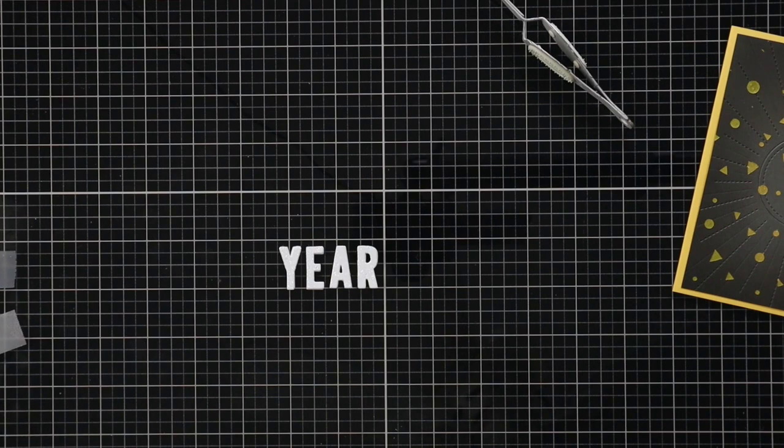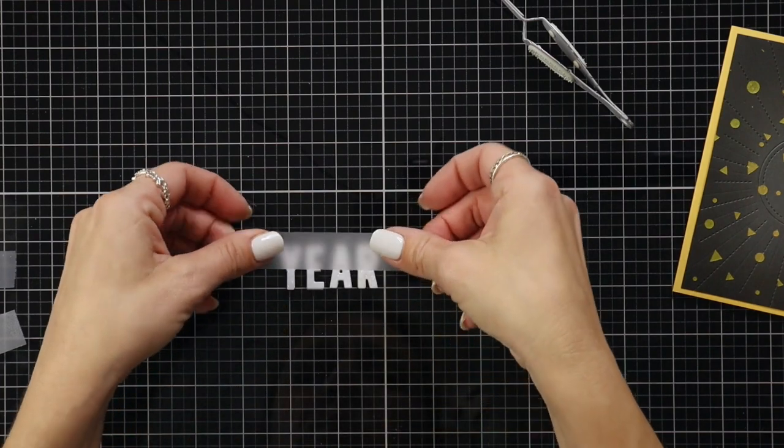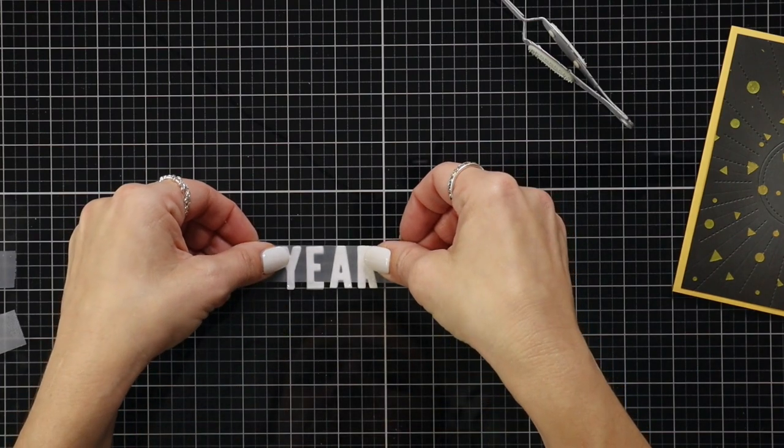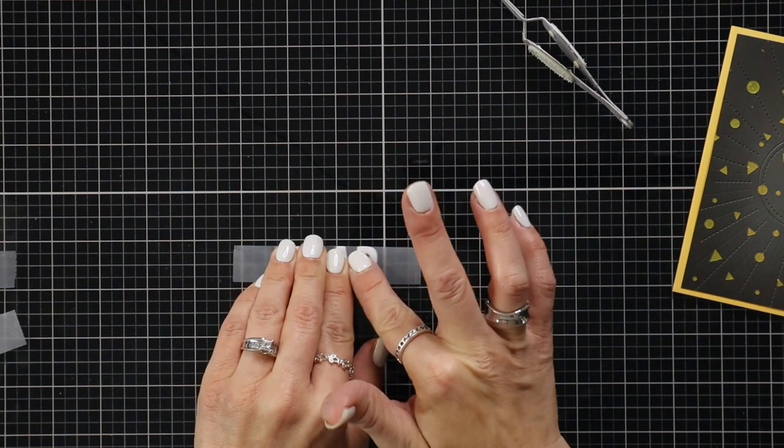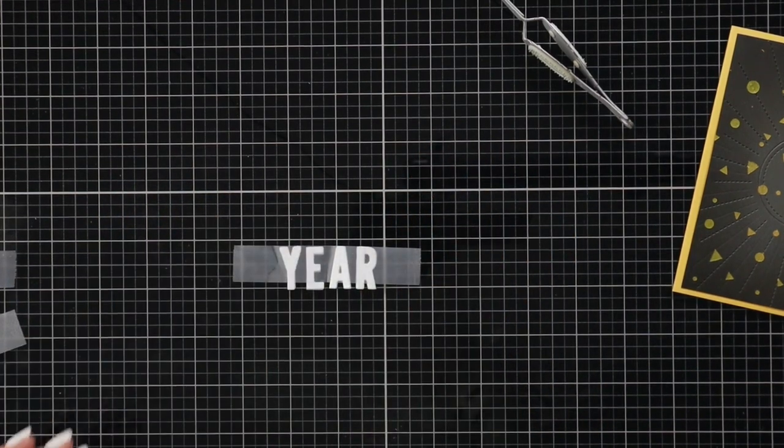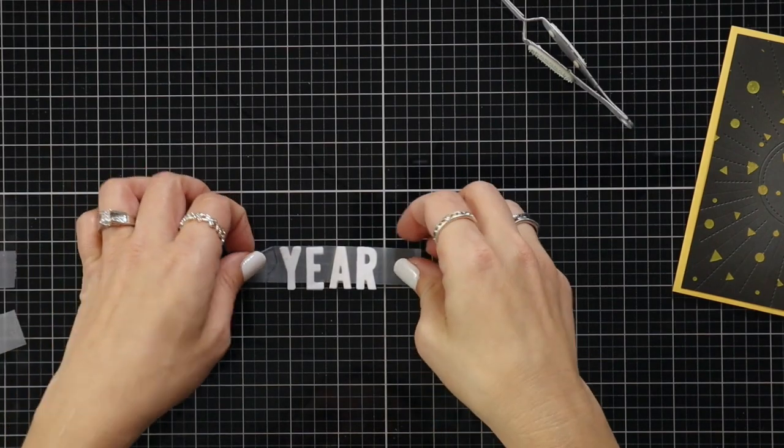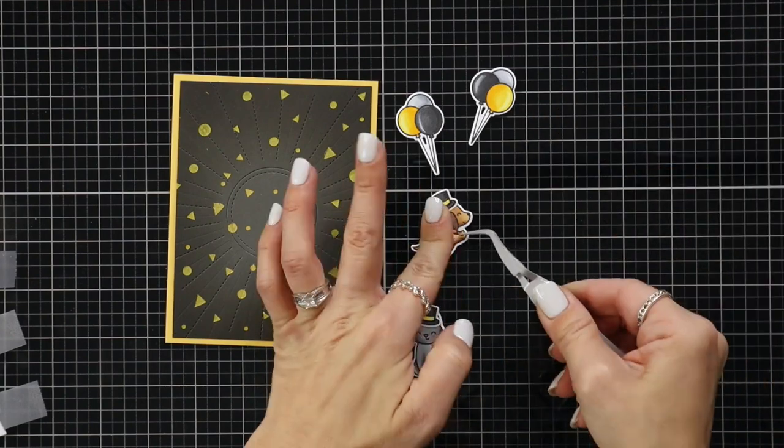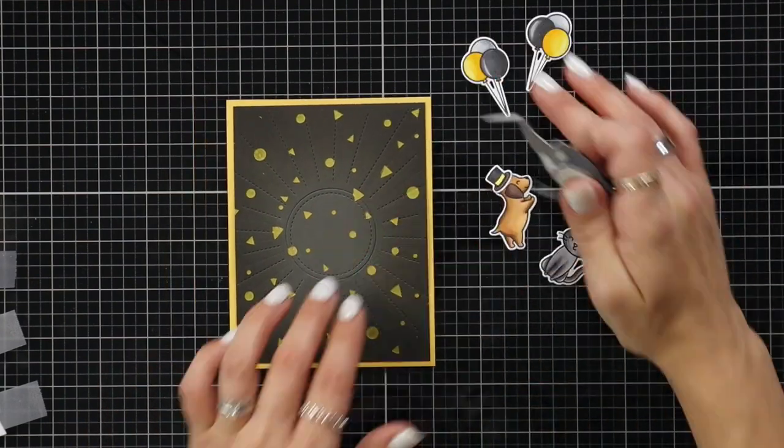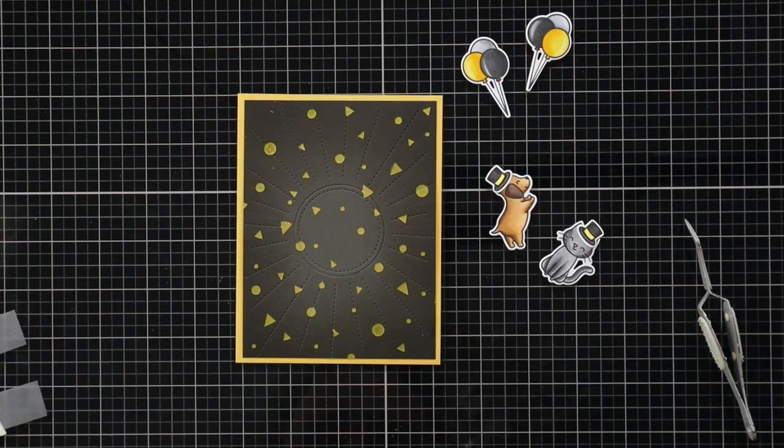Now that all of my components are ready for the front of my card I can start getting everything attached. So I lined up all of my letters on my grid surface and then I'm placing just some scotch tape over the front of it to hold it together. Now if it's not completely perfect I'm going to attach it with liquid glue which means I have a little bit of wiggle room to adjust it if needed.